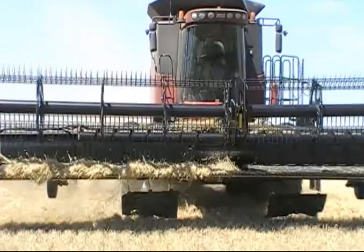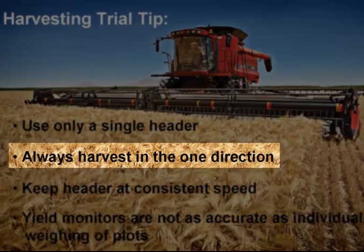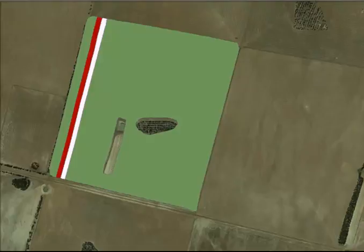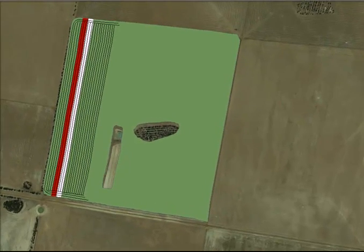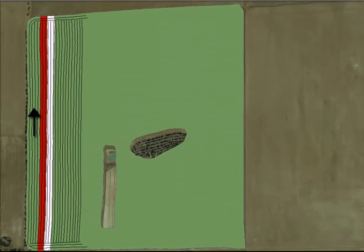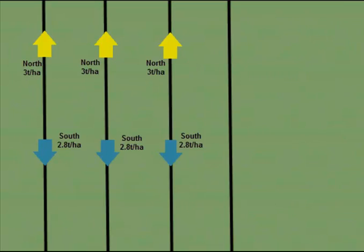Another source of data error is sometimes present in the direction of travel effect. This has been noted in several trials, however is not consistent — that being that the harvester will record a slightly higher yield when travelling, say, north as opposed to travelling south. This can be detected by analysing yield of immediately adjacent run lines. There should be very little variation in this data, within 100–200 kg. The direction effect is neither consistent nor reliable.